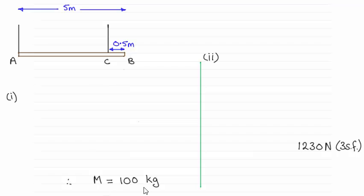And as you can see it turns out to be 100 kilograms. And then in the second part you had to find out the tension in the rope C and that turns out to be 1230 newtons to three significant figures.